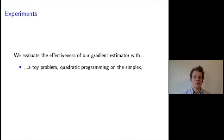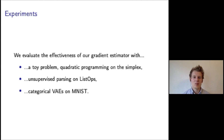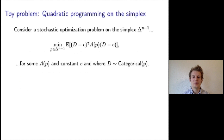We evaluate the effectiveness of our gradient estimator for training latent variable models with categorical structure. We considered three tasks: first, a toy task of quadratic programming on the simplex; second, a model from natural language processing with a latent parse tree structure; and third, generative modeling using categorical variational autoencoders on MNIST. In this presentation, we restrict our attention to the first and third experiments.